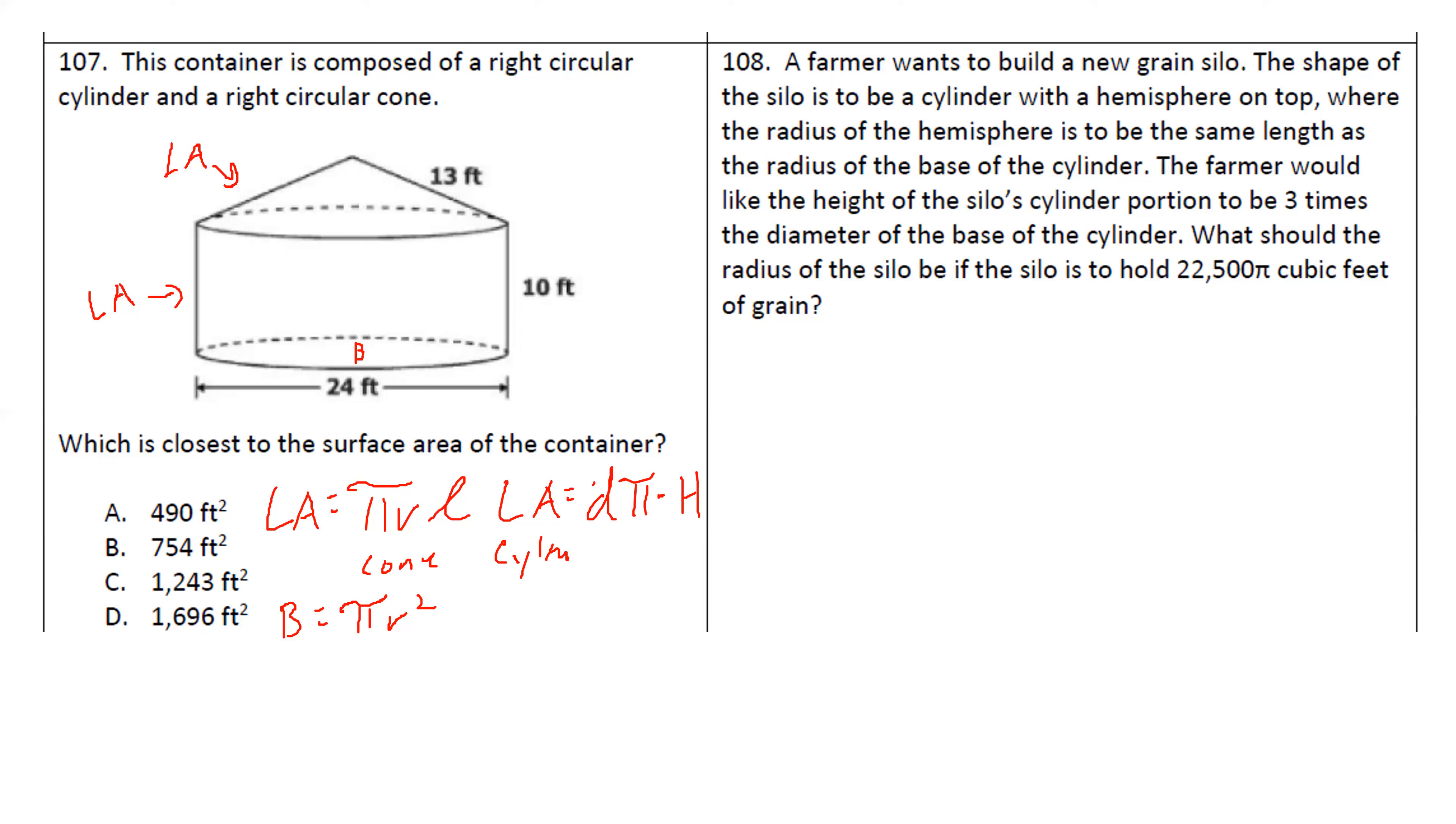Lateral area for a cone was found by doing pi R L. This was for the cone. Then we had lateral area for our cylinder was our perimeter of our base, also known as circumference. So diameter times pi times the height. Then we had our area of the base. This is going to be pi R squared. Those are the things that we need to do. Our radius for this cone is the only thing that we're missing. And that's going to be 12 because it's going to be half the distance across. So, we're going to have pi R L. So pi 12 times 13. Plus diameter 24 times pi times the height of 10. Plus the base area, pi, the radius again was 12 squared.